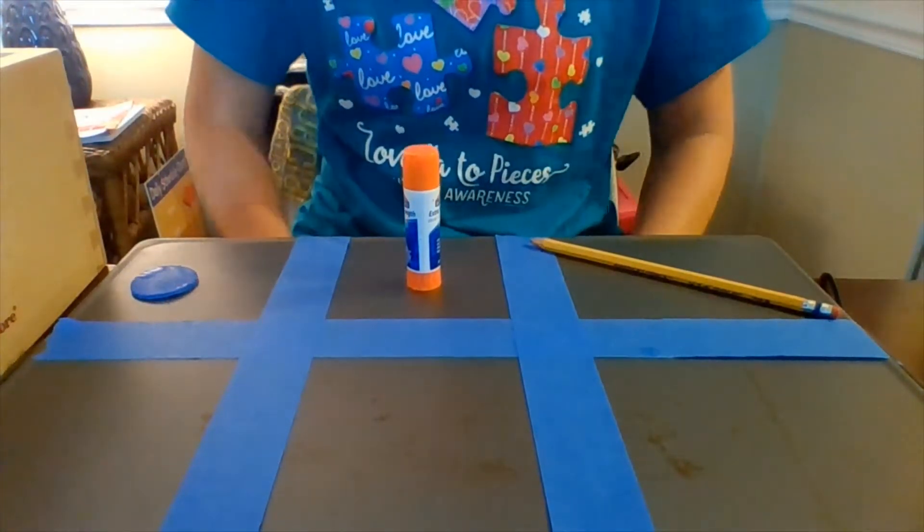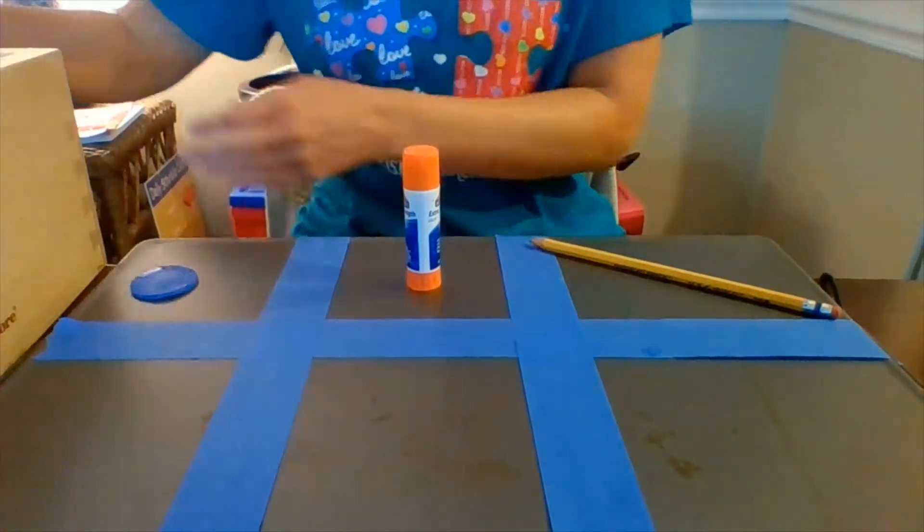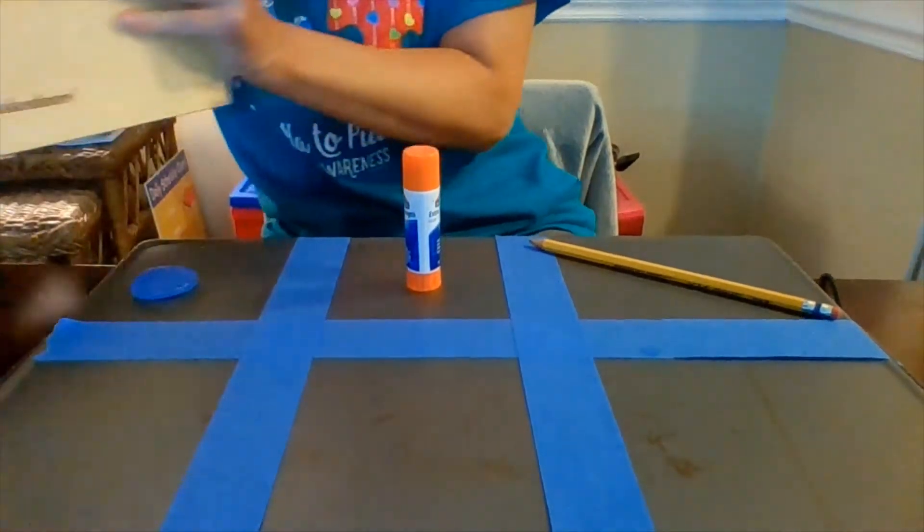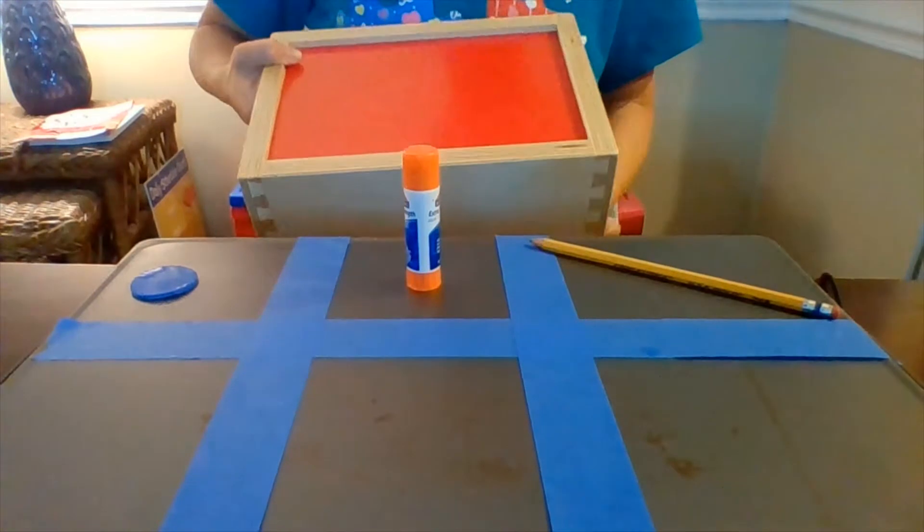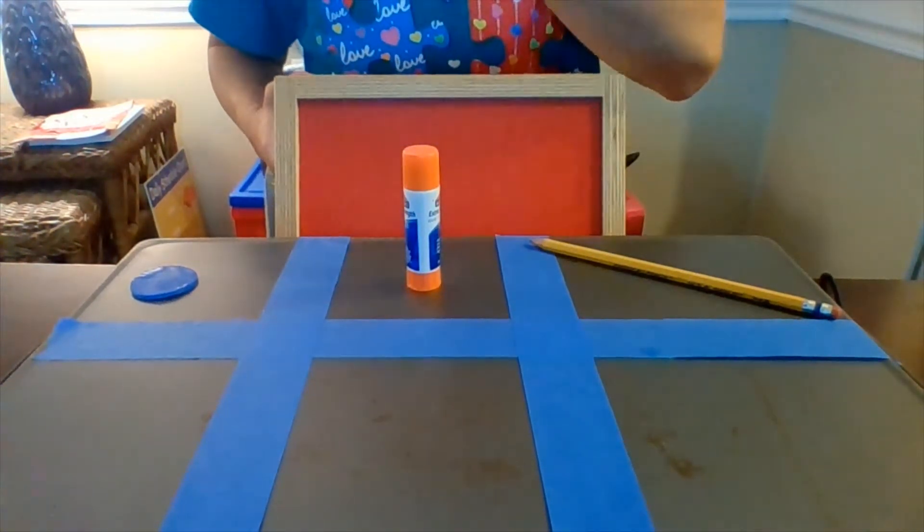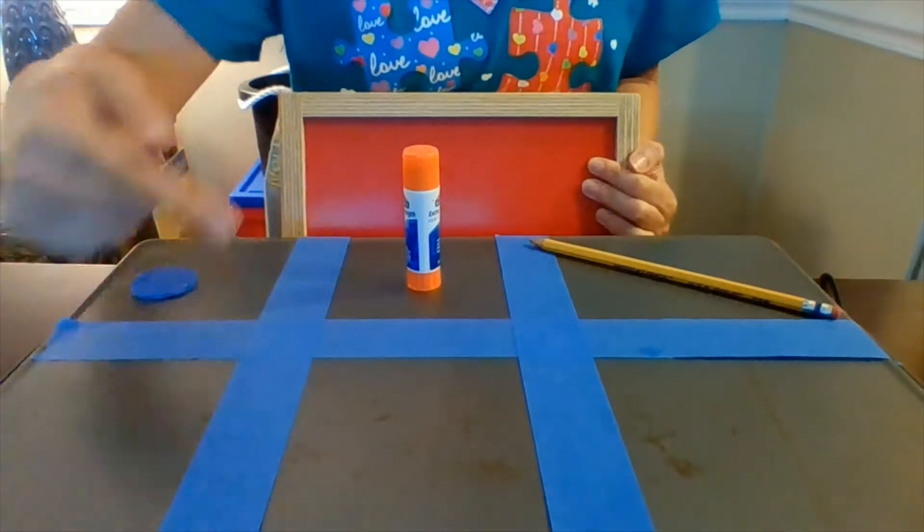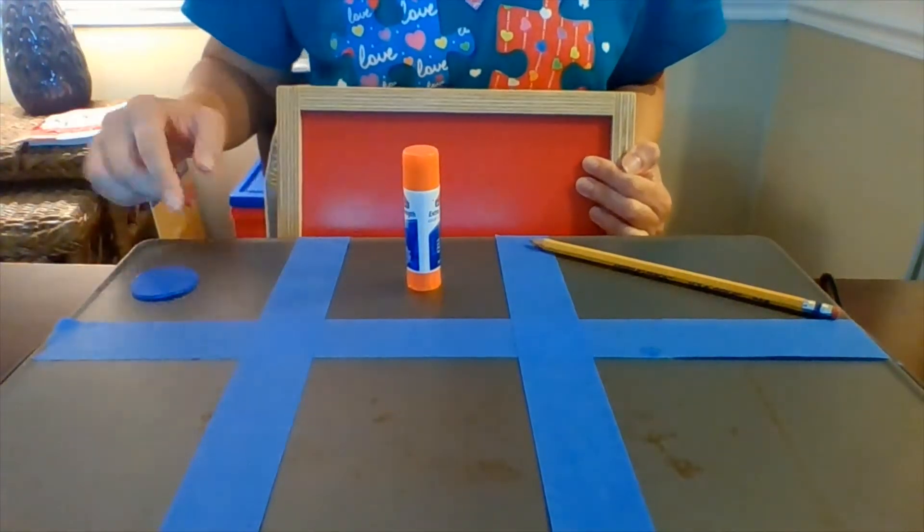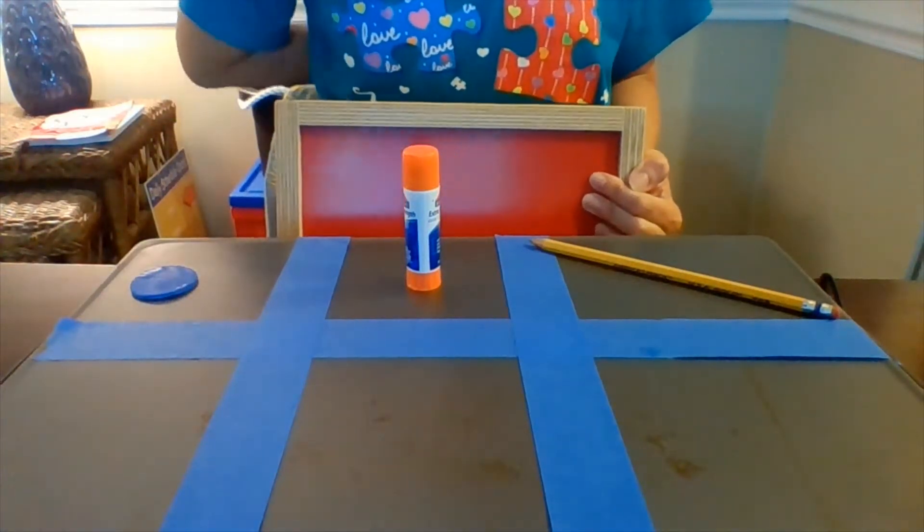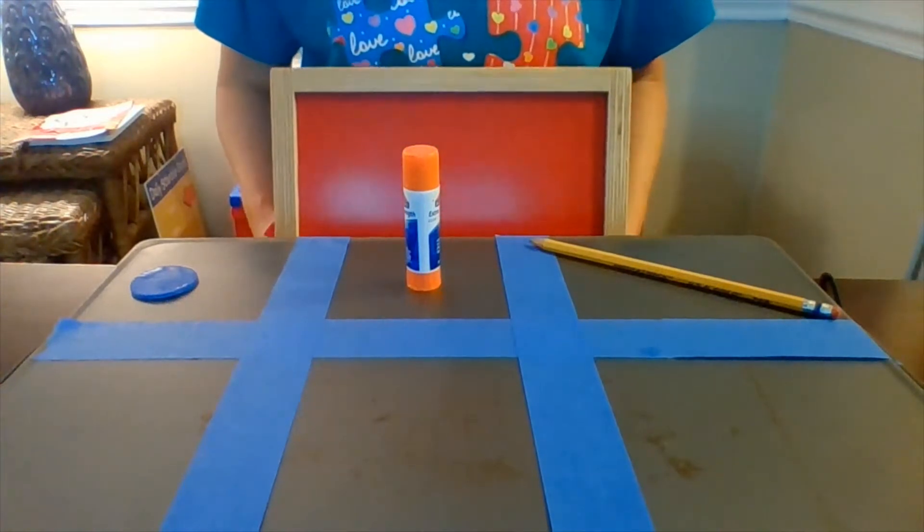So today we're going to talk about how to practice matching or finding the same. You can take a shoe box or any type of box you have in your house. I'm using this one. And you can put three items that match what you have. I made a matching tray by just using the back of a cookie sheet. And I found three items that we use for school and divided the cookie sheet into six spaces.